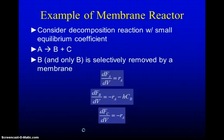If we consider for example A going to B plus C where B and only B is selectively removed by the membrane and for now it's irreversible so we can just look at how much that enhances the rate of reaction. For A nothing changes, and for C nothing changes. But for B we have an extra term and that's due to removal through the membrane at a particular rate determined by the permeability.